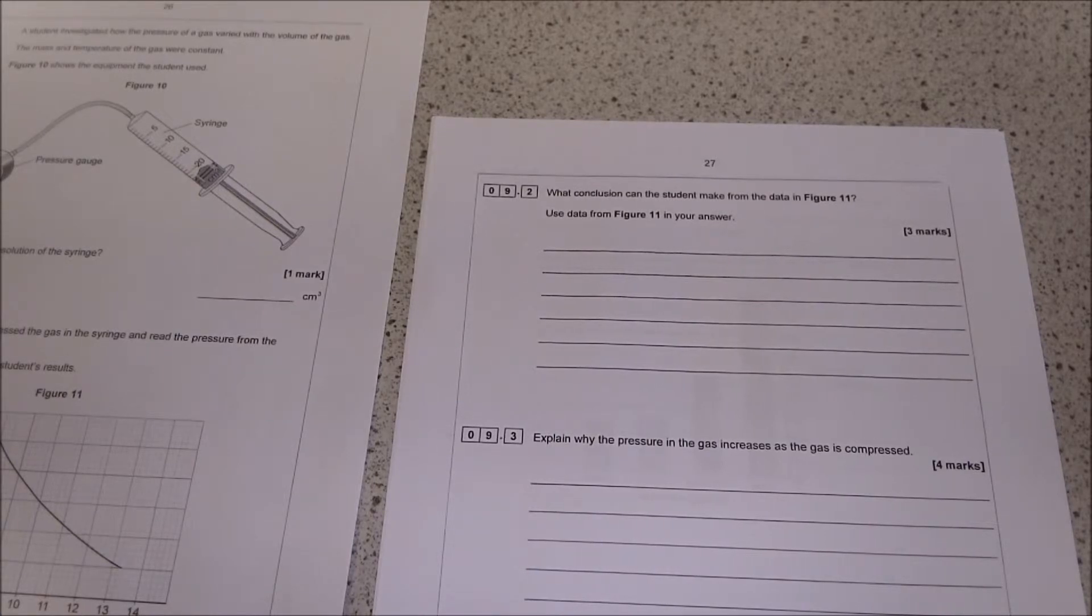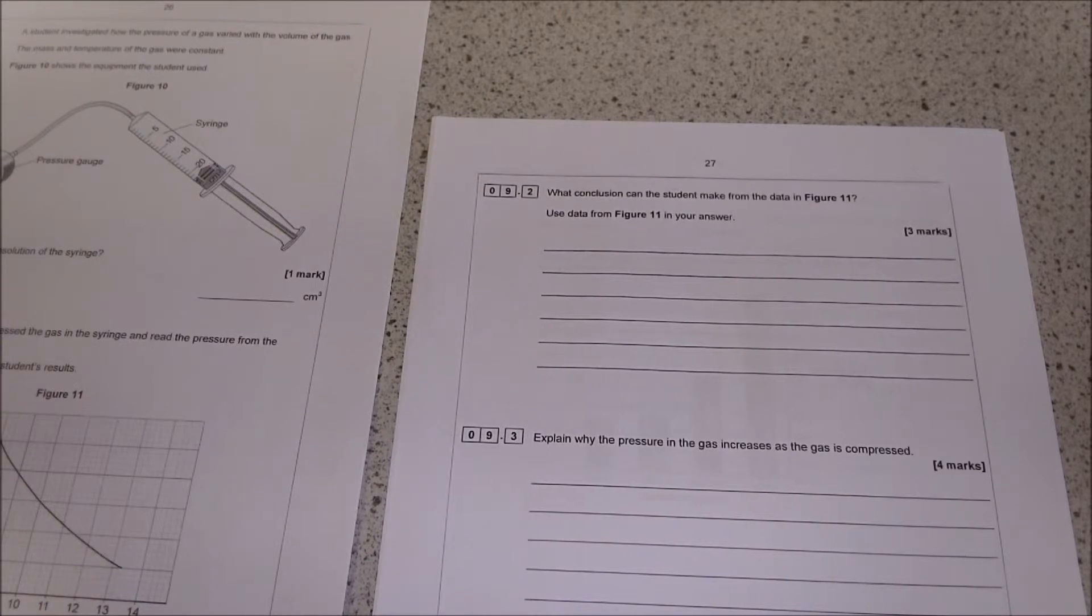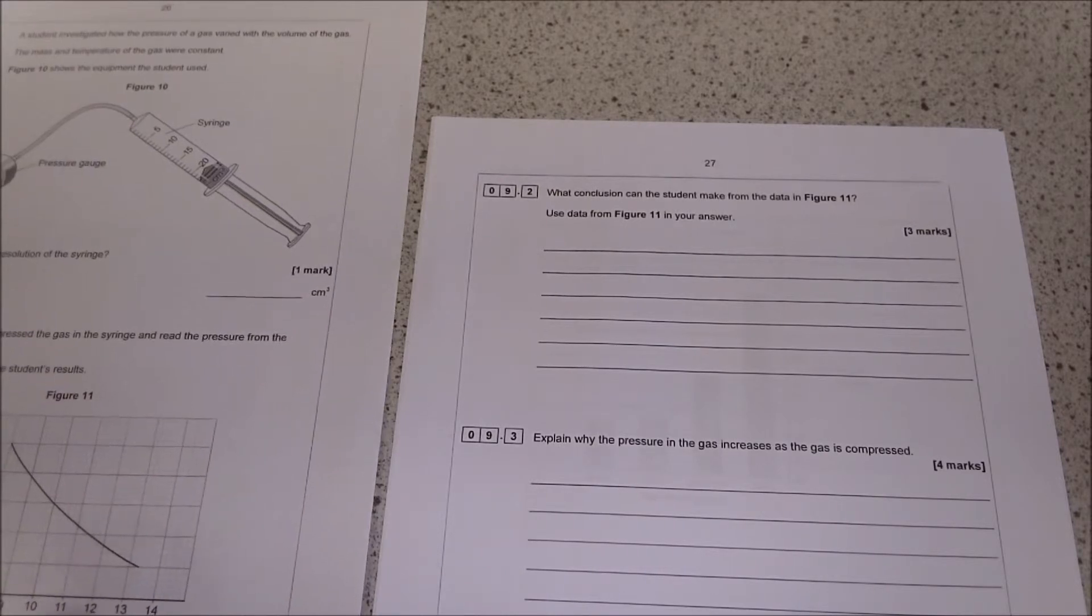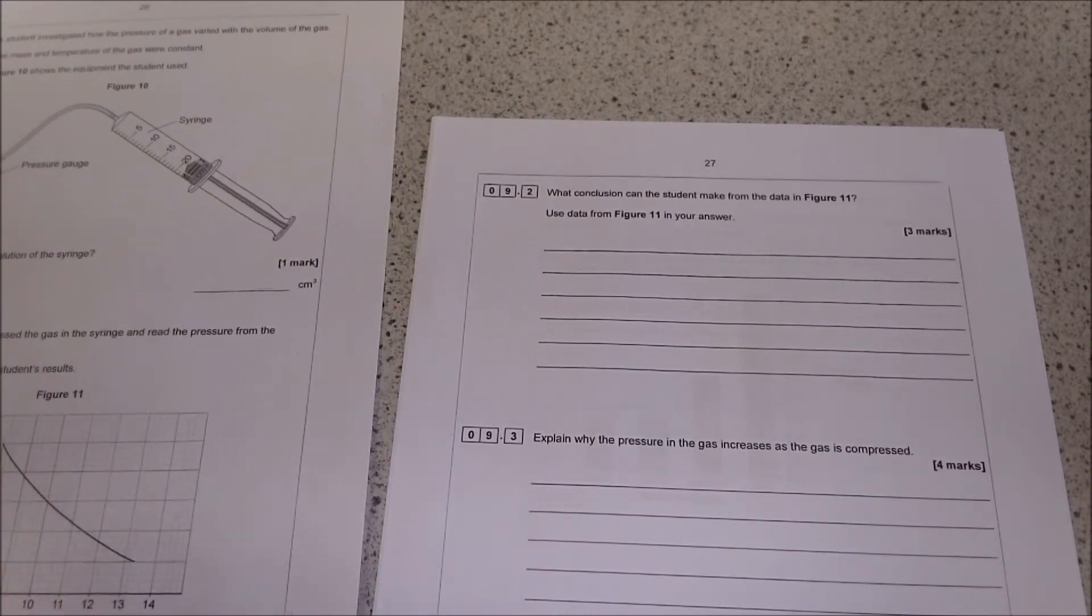What conclusion can you make from Figure 11? Use data from it to support your answer. All you're doing is talking about the pattern. So you need to be saying things like the pressure is inversely proportional to the volume, and then include a couple of bits of data to prove that. So when the volume is 8 the pressure is 200, when the volume is 13 the pressure is only 120. Anything like that will suffice.